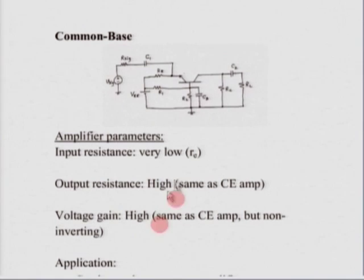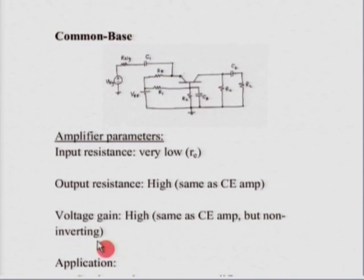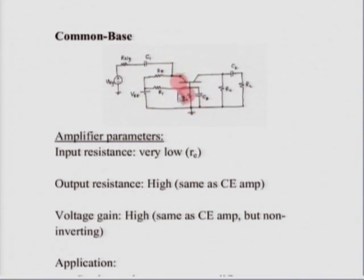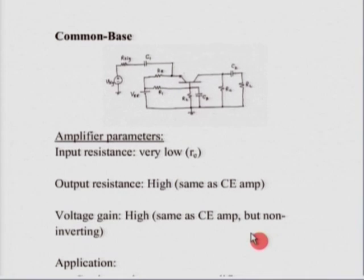Coming to the voltage gain, you get the same expression as in the common emitter, except that there is no negative sign in a common base amplifier — the voltage gain is positive. This is because in the common emitter case, the signal was applied to the base, so any increase in base voltage resulted in an increase in collector current, which decreased V_CE. In the common base case, it is the other way, hence no negative sign.